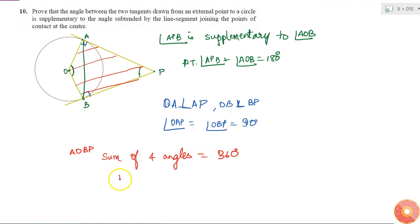This means that angle AOB plus angle OBP plus angle APB plus angle OAP, correct? This one plus this one plus this one plus this one should be equal to 360 degrees.